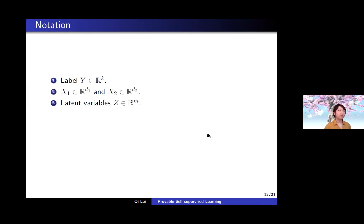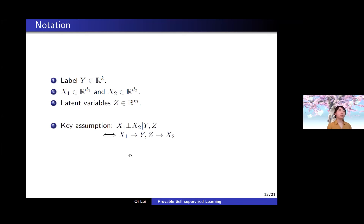Let's recap the notation. Our label is Y and the input is X1. The pretext task is to predict X2 from X1. There are also some latent variables we'll discuss later. Our key assumption is that X1 and X2 are approximately conditionally independent given Y and some latent variable Z. In the language of graphical models, it is just a chain rule. This roughly means that to predict X2 from X1, we have implicitly learned Y and Z already.